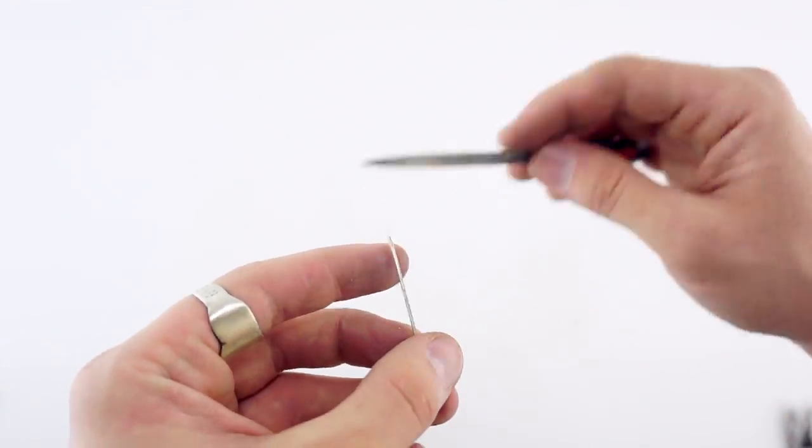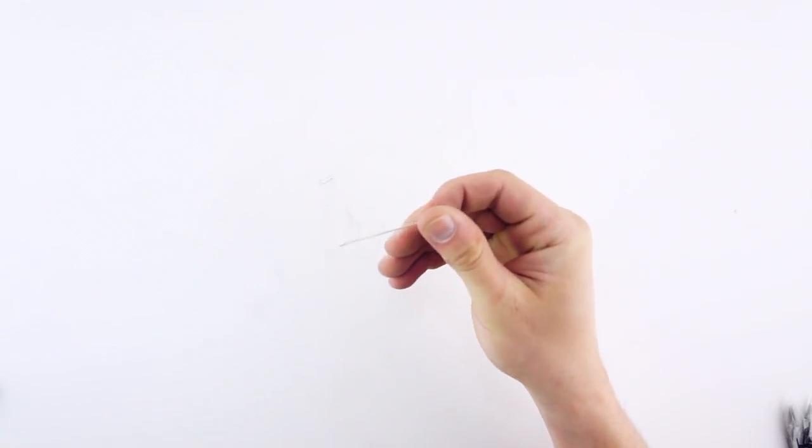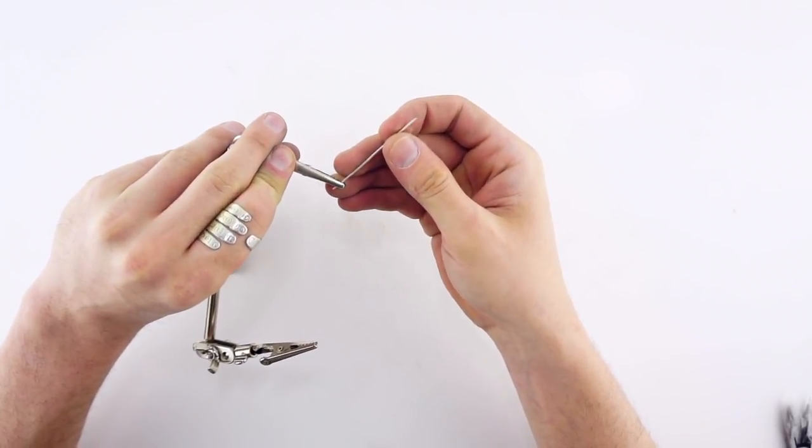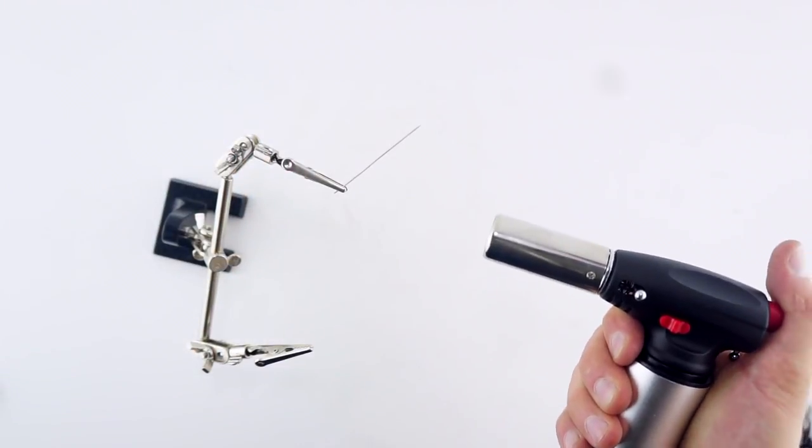So when you work with metal and start hammering it and bending it a lot, it'll get work hardened, which means it's really stiff and kind of brittle. To fix that, you're going to nail it with a blowtorch.